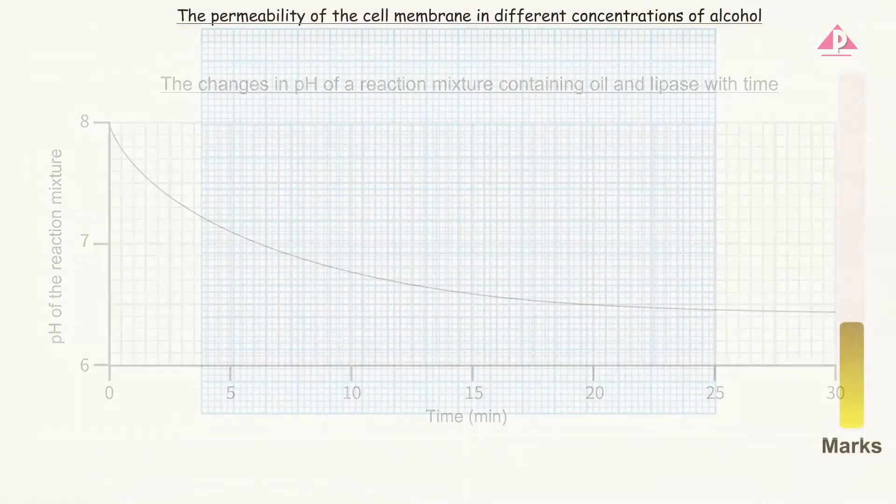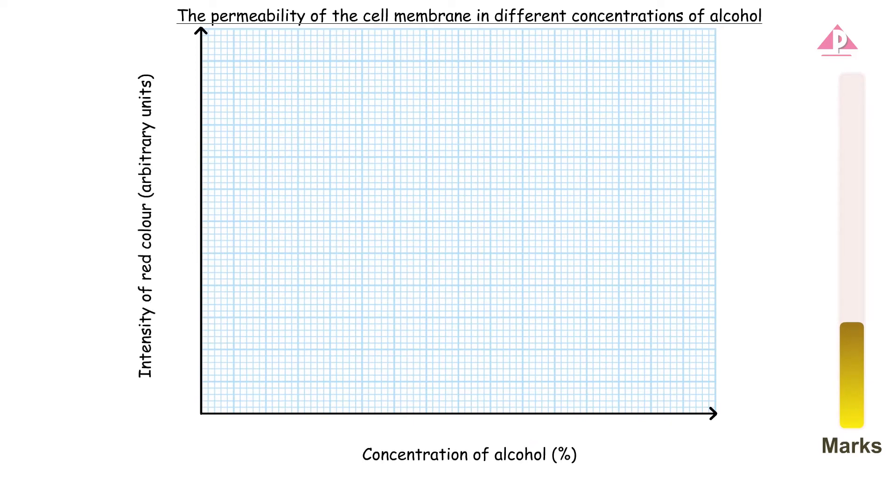After writing the title, draw the x and y-axis on the graph paper. Label the x-axis with the independent variable and the y-axis with the parameter for measuring the dependent variable. Remember to include the units. Up to this stage, you score one to two more marks.